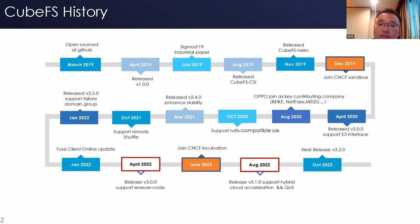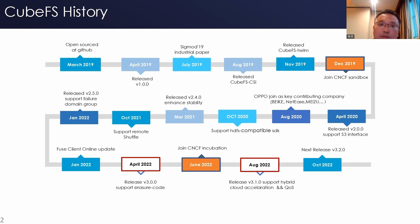At the beginning of this year, we released version 3, which is a significant release supporting erasure code to reduce cost in data lake scenarios, and it has already been online for one year in our private storage platform. We are honored that KubeFS became an incubation project in June. In August, we released version 3.1, which supports hybrid cloud acceleration and QoS flow control components.